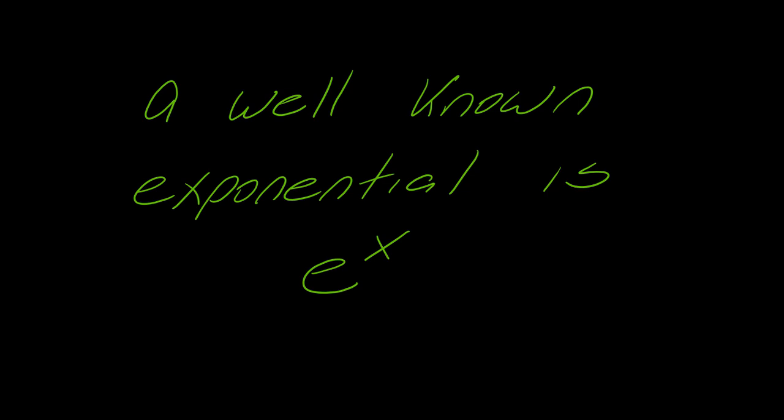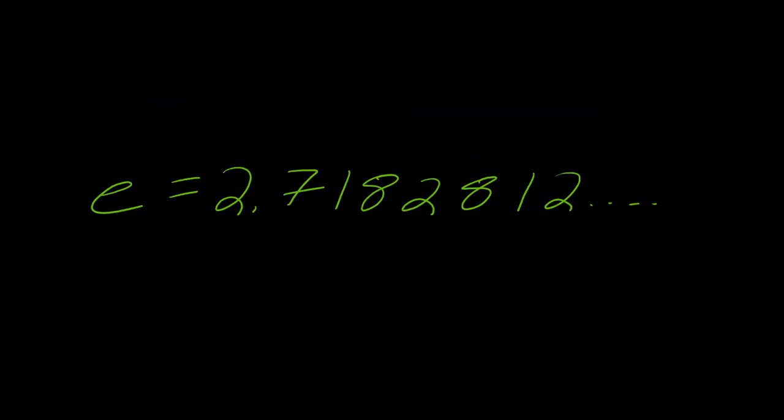Now, a well-known exponential is e to the x, and e is one of those naturally occurring numbers. It's kind of like pi. So e is 2.718, blah, blah, blah, blah, blah. This can just go on forever. So it's just a naturally occurring number.